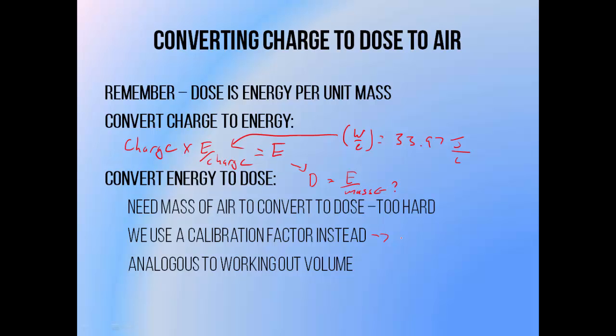This involves sending our ion chamber off to a primary standards lab, where it's exposed to a known amount of radiation as determined using a primary standards dosimeter like a graphite calorimeter or a cavity ionization chamber. And the ratio of delivered dose to measured charge is determined. This is the calibration factor.